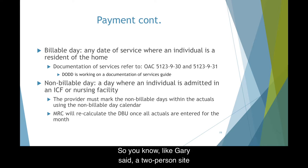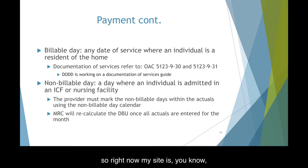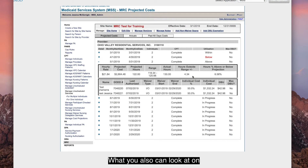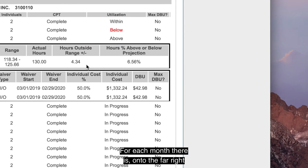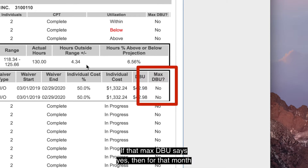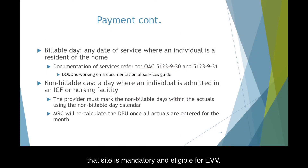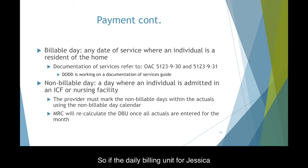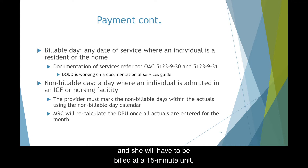A two-person site can very easily become EVV eligible overnight. When cost projecting, once a site has been finalized on authors, a provider can go in and enter the actuals. On the projected cost page, you can look at the max DBU — on the far right of the columns, there is a max DBU button. If max DBU says yes for that month, that site is mandatory and eligible for EVV. Max DBU right now is $508.30, so if the daily billing unit for an individual reaches $508.31, they've reached their max DBU and will have to be billed at a 15-minute unit, making that site subject to EVV.